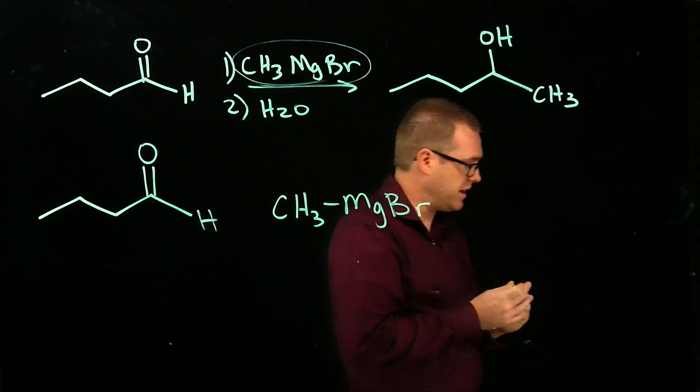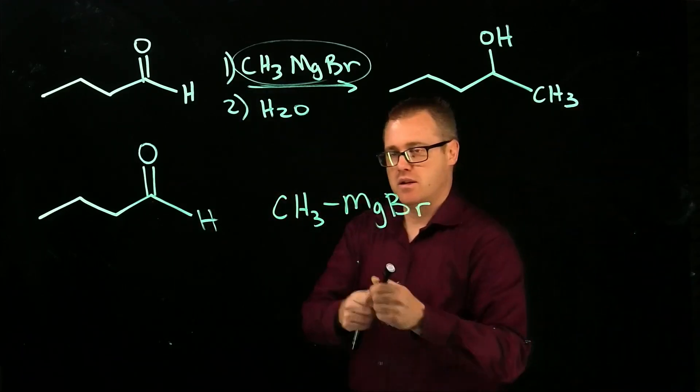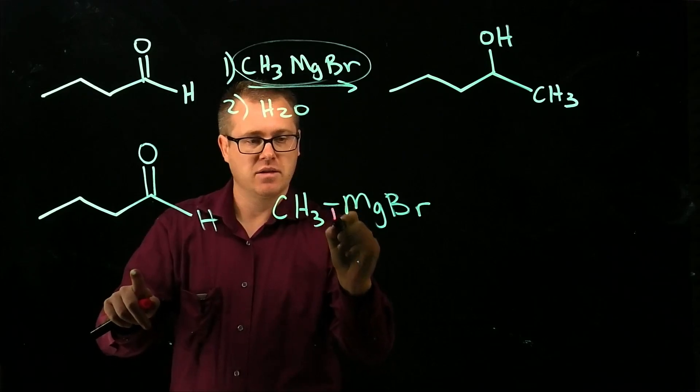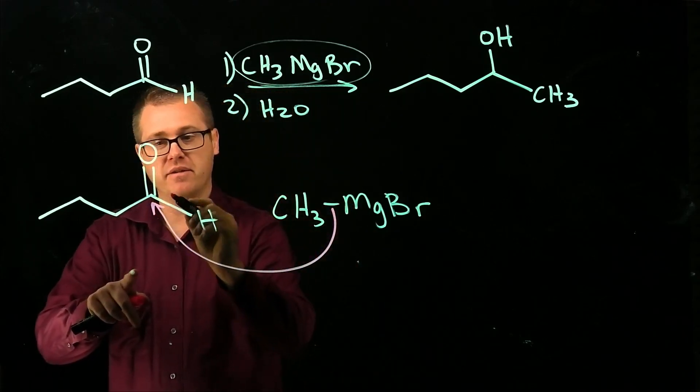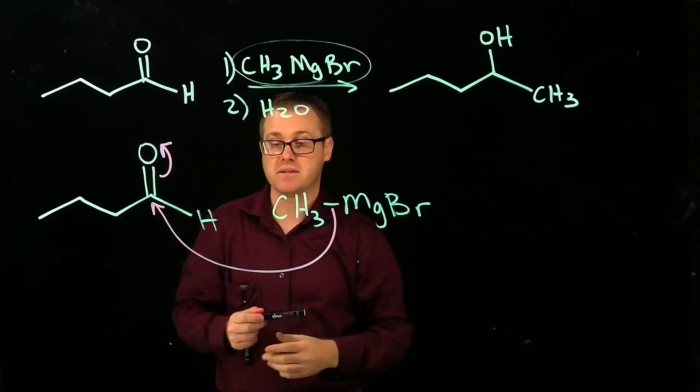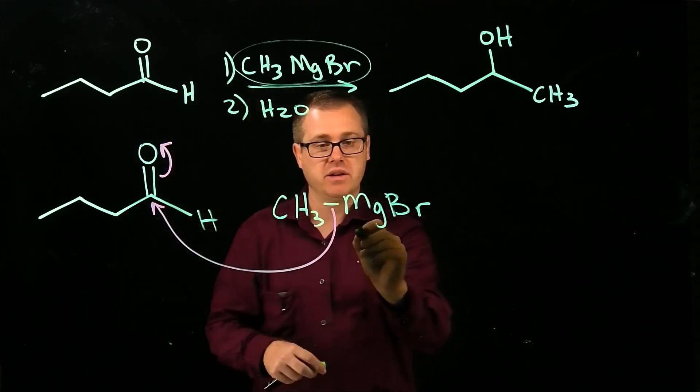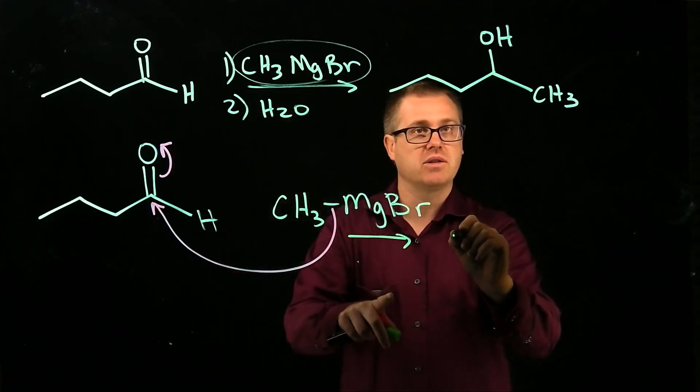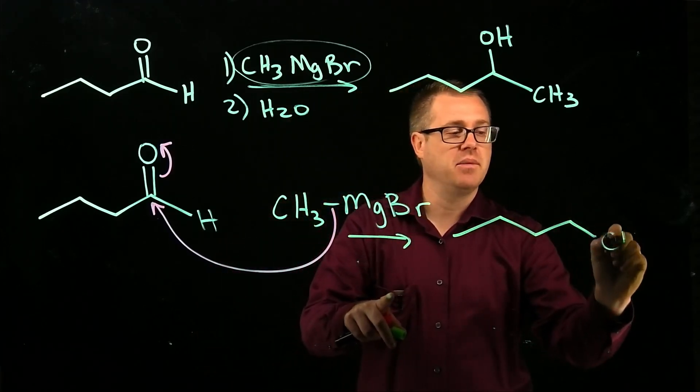You could look at the mechanism like this in which this bond right here can attack from the front face or the back face. So what's that going to do? That's going to give us a racemic mixture.